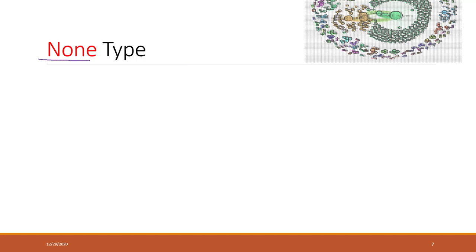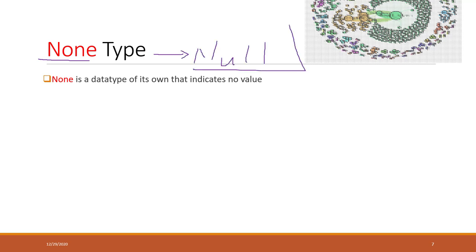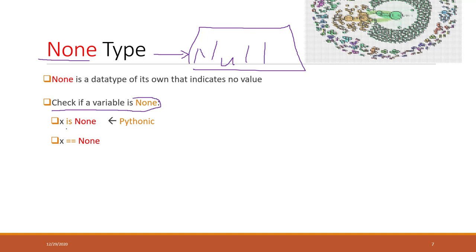Let's talk about the None data type. None is a special data type that means there's no value. It is similar to null in other programming languages, like null in Java, and also in relational databases like SQL. To check if a variable is None, you can use either the 'is' operator or the double equals operator, however we prefer 'is' because it's easier to understand.